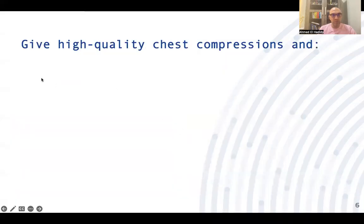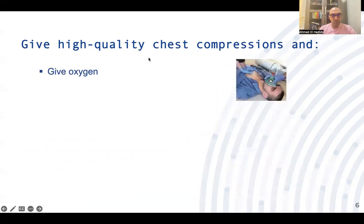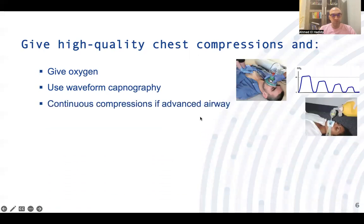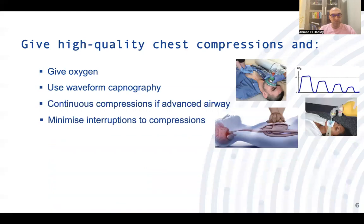The algorithm also requires high-quality chest compressions. Consider giving oxygen and use waveform capnography to monitor end-tidal CO2. If an advanced airway such as an endotracheal tube or laryngeal mask airway is inserted, use continuous compressions — 100 to 120 per minute — with ventilations at 10 to 12 per minute. Minimizing interruptions to chest compressions is critical, as compressions build the blood column going to the brain. Shift chest compressors every two minutes during rhythm assessment.